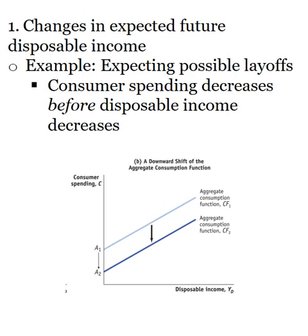Let's go through each shifter. We know that expecting your future disposable income to change will lead to a change in consumer spending. First, assume we expect our future income to increase. When you get your first job, you haven't received your first paycheck yet so your disposable income hasn't changed, but you know it's going to. You might start buying new appropriate clothes, pay a security deposit on rent — your spending goes up before your disposable income goes up. So the entire consumption function shifts upward. This is also true for people who expect a Christmas bonus — before receiving the money, they might start spending it.